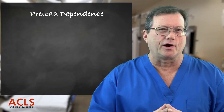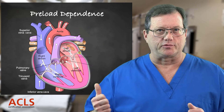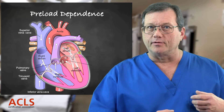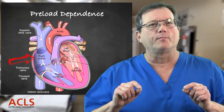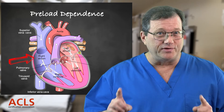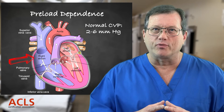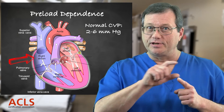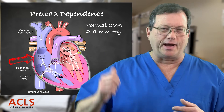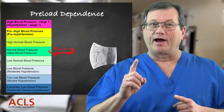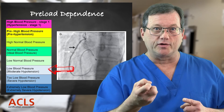Now let's look at preload, since these MIs are always said to be preload dependent. When talking about preload we look at central venous pressure. Blood returns to the heart through the inferior and superior vena cava, and because there's no valve before the right atrium, that blood dumps right into it. So central venous pressure and right atrium pressure are about the same. A normal CVP in a healthy person should be between 2 and 6 millimeters of mercury - it's a very low pressure system. With a healthy right ventricle it squeezes and pushes blood to the lungs, back to the LV, and out to the body. However, if I have an infarcting right ventricle, it's not going to pump as well, so I'll have decreased output with this already low CVP.